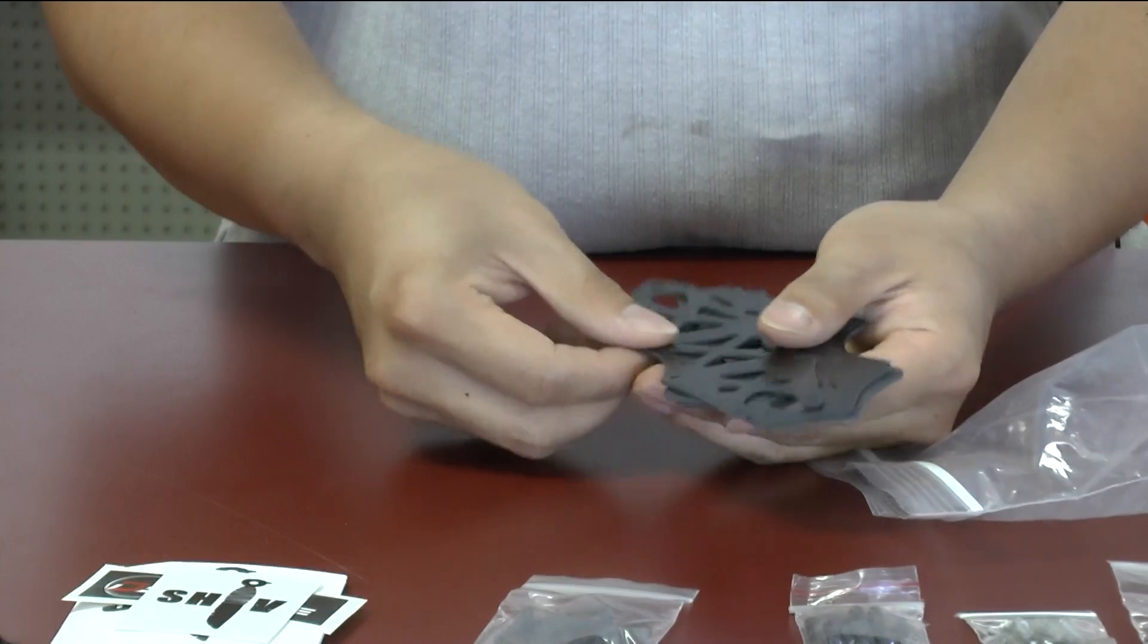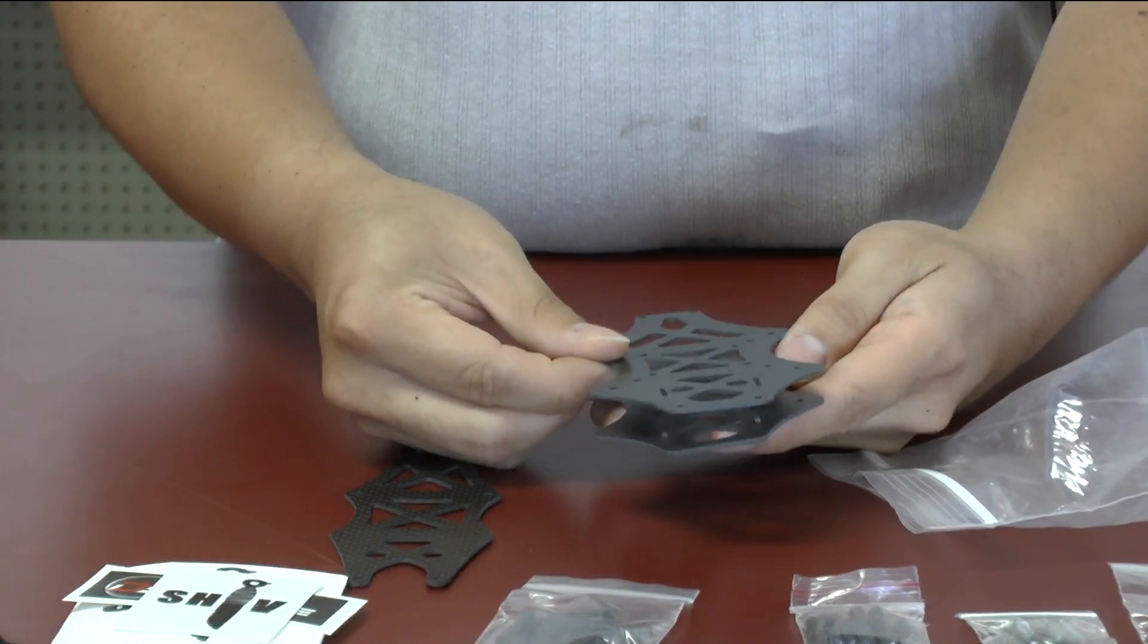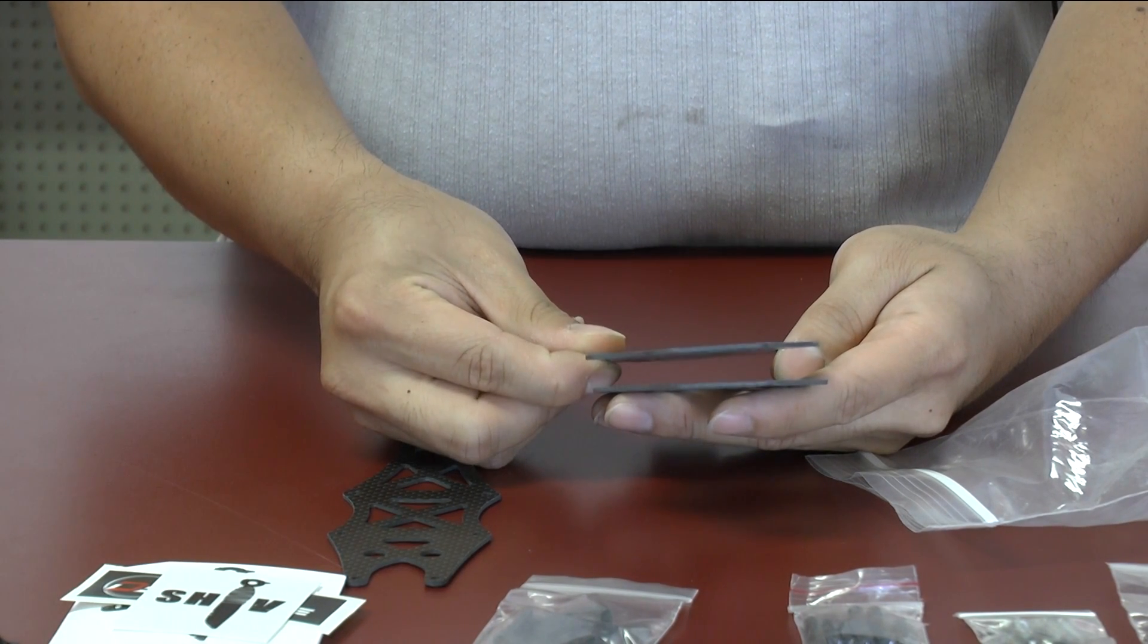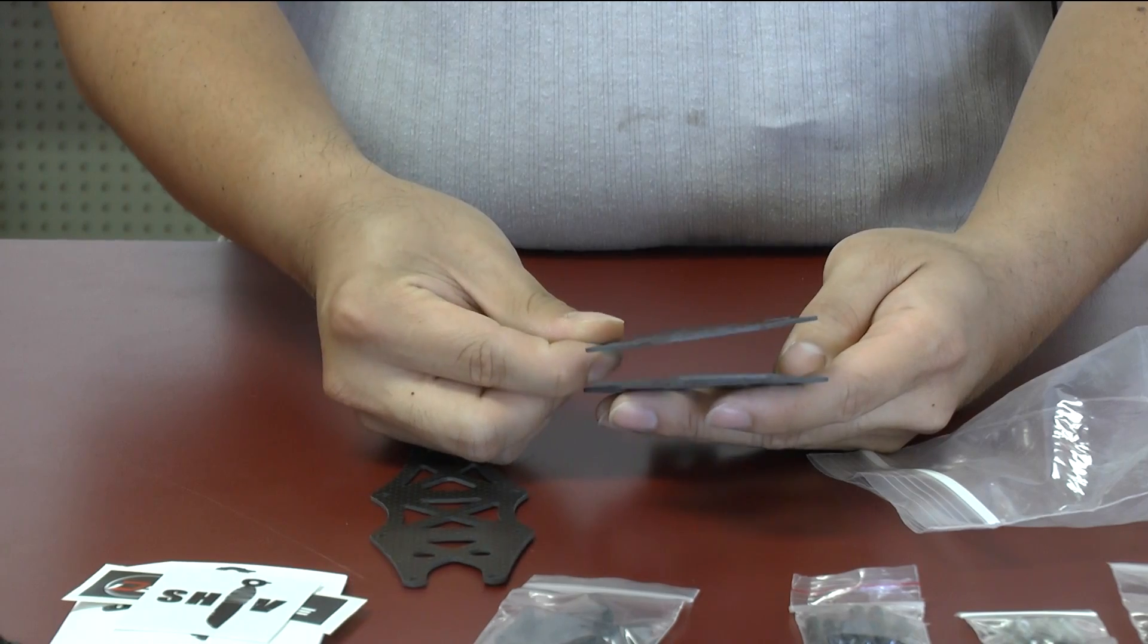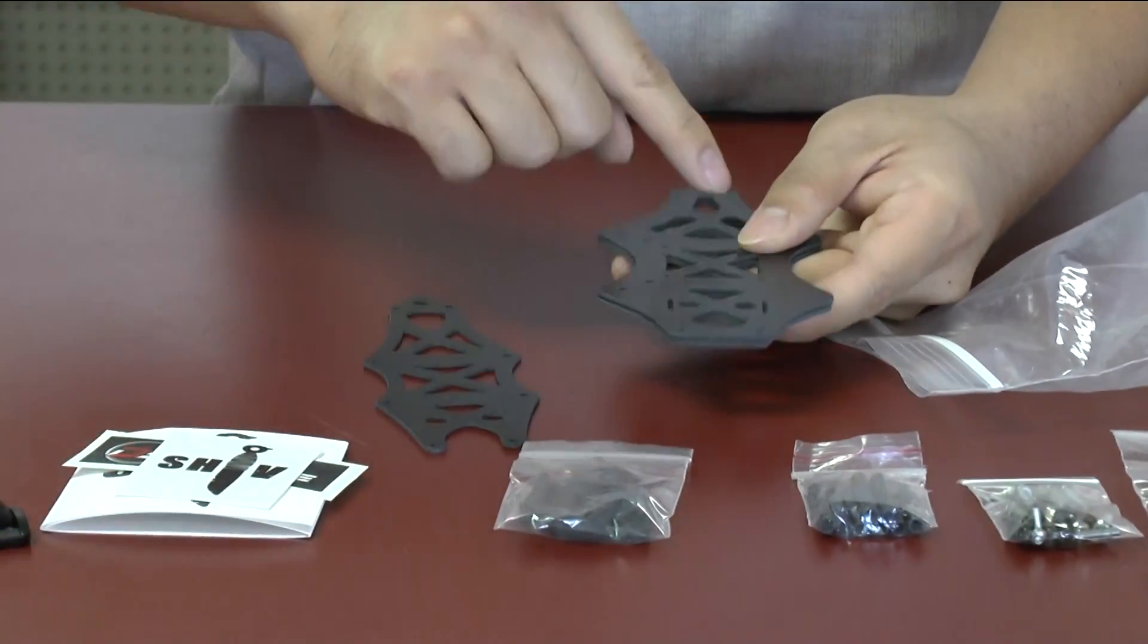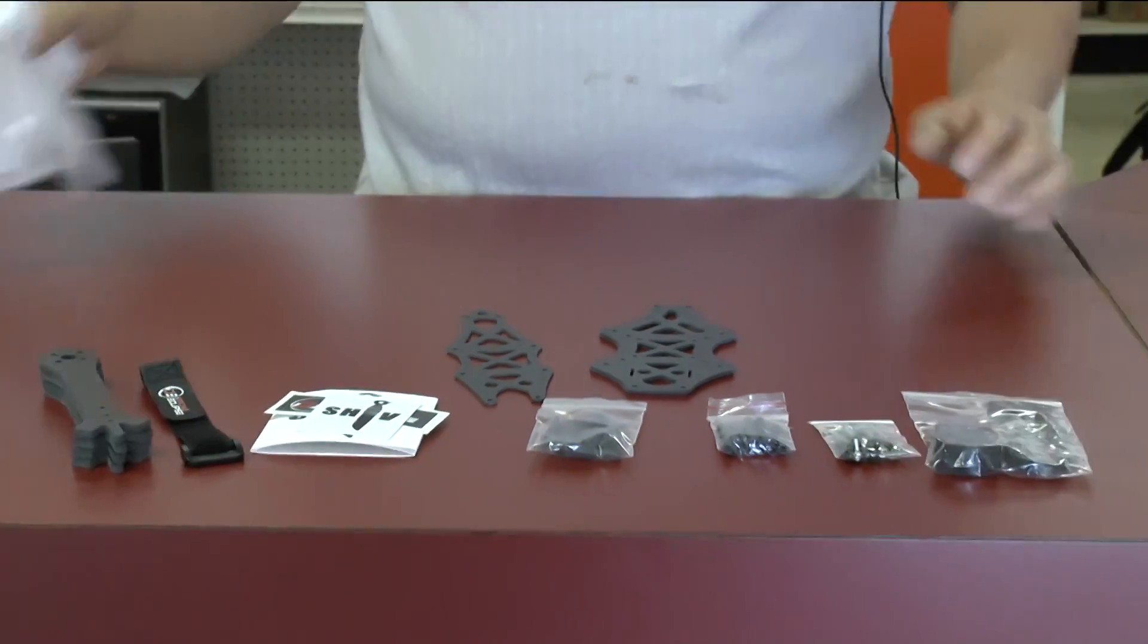And then lastly, we have the top plate of the SHIV. And then we have two bottom plates. So the arms are sandwiched between the two bottom plates, making it easy to be able to have reinforcement from the top and the bottom. And then we have these to fit on the front and on the back. So that is everything that comes in the bag.